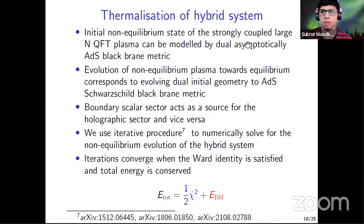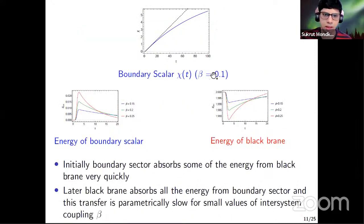So we start with some non-linear initial state of this hybrid system and study its time evolution. So I will skip the details of the calculation, only show the results. So the top plot is for the boundary scalar, time evolution of boundary scalar. Okay. So the black dashed line is when beta is zero, when it is decoupled from the holographic sector, it will be just a straight line. But when it is coupled, so for beta equal to 0.1, the blue curve. So it will eventually at asymptotically late time, it will become flat. So the chi will become constant.